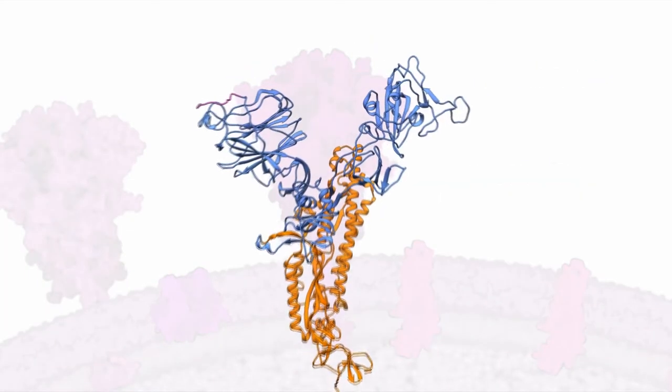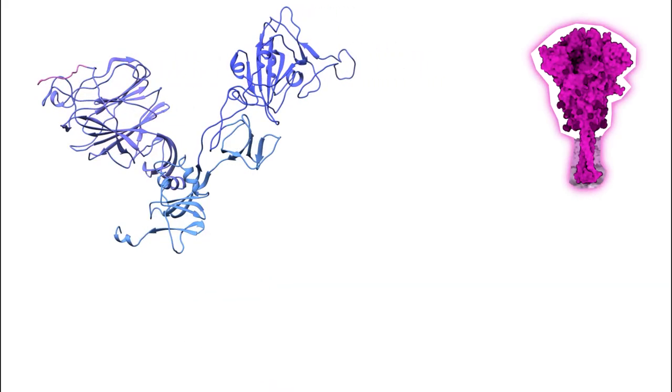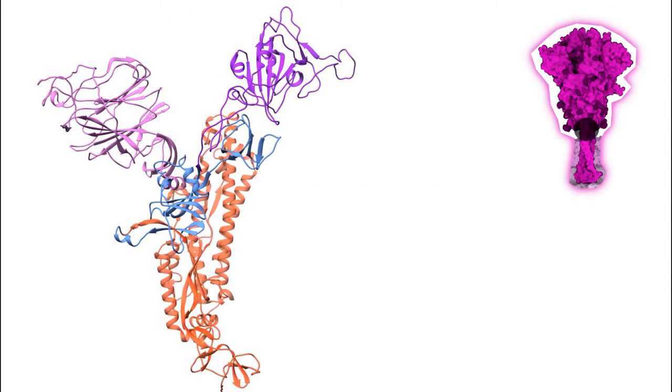The N-terminal of the spike is associated with the S1 subunit that is responsible for binding to the ACE2 receptor. Two components make up the S1 subunit: the N-terminal and an RBD that is specifically encoded to recognize the ACE2 receptors.